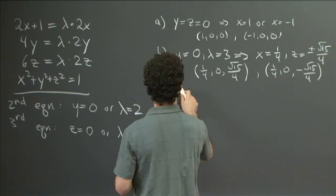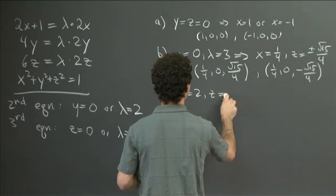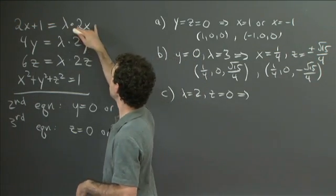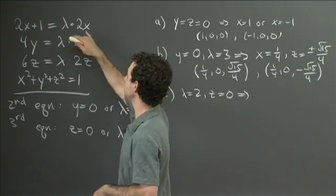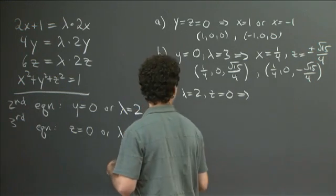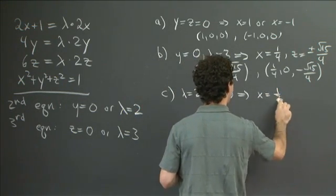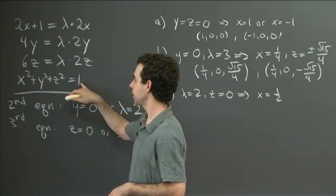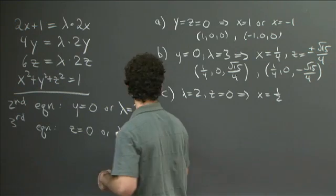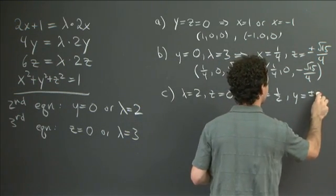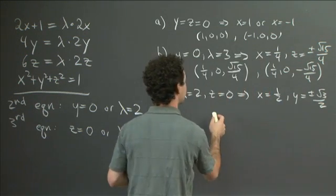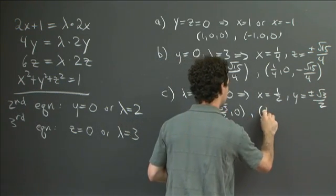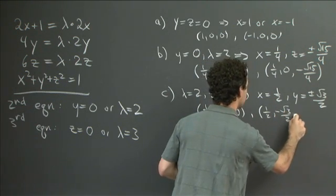Our third case is when lambda equals 2 and z equals 0. When lambda equals 2 in the first equation, we have 2x plus 1 equals 4x, so 2x equals 1 and x equals 1/2. Taking z equals 0 and x equals 1/2 into the constraint equation gives 1/4 plus y squared equals 1, so y equals plus or minus the square root of 3 over 2. This gives us the two points (1/2, √3/2, 0) and (1/2, −√3/2, 0).